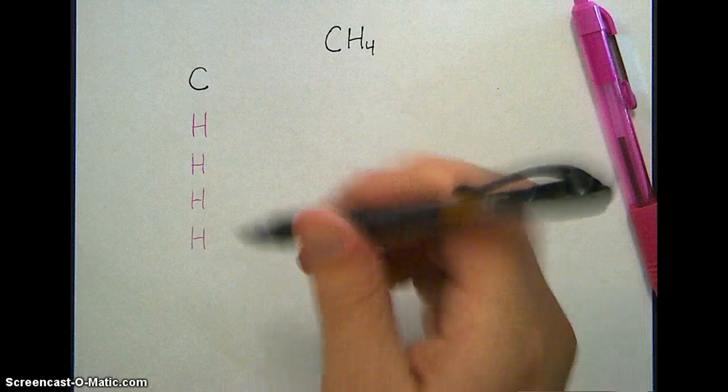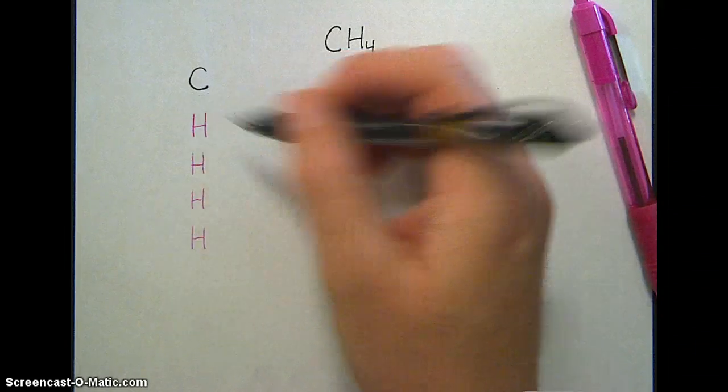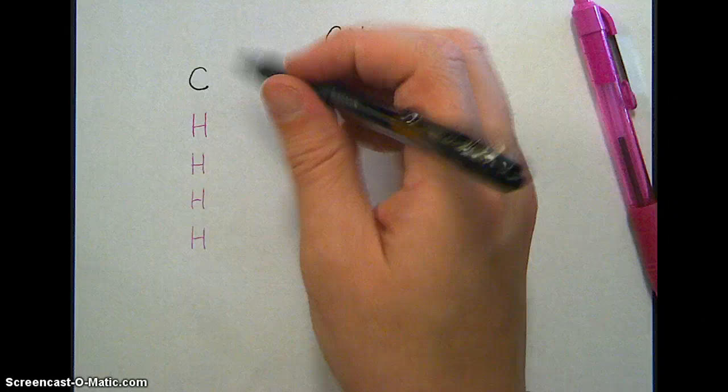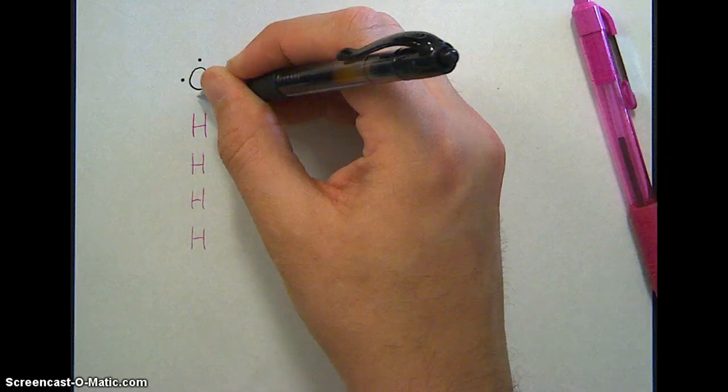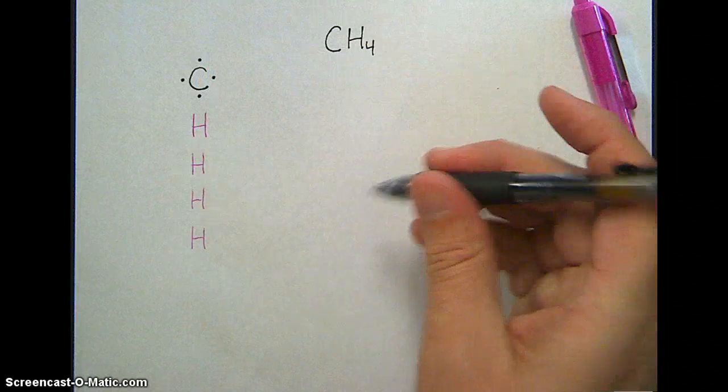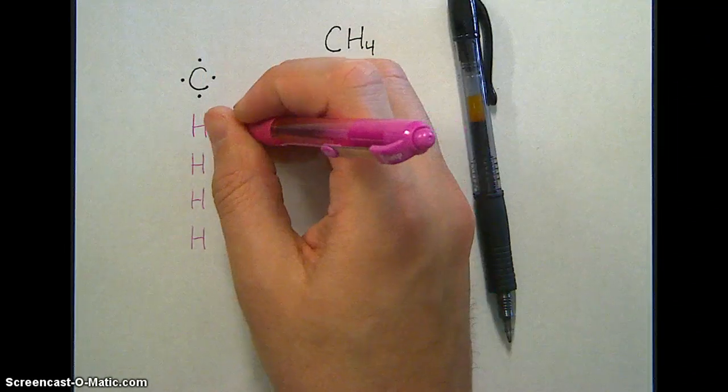The next step is to draw the Lewis dots, the electrons around the edges to represent the valence electrons. Carbon's in group four of the periodic table, which means it has four valence electrons in its outer level. Hydrogen is in group one and has one valence electron.